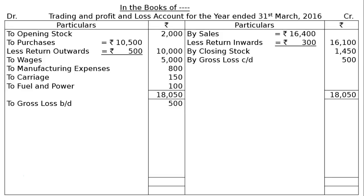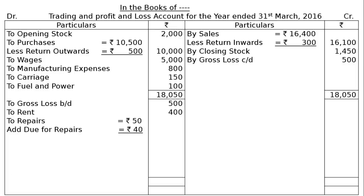In the profit and loss account, we bring down gross loss of rupees 500. Office expenses: rent rupees 400; repairs rupees 50 plus adjustment — fourth adjustment — due for repairs rupees 40 (outstanding repairs), totaling rupees 90. This outstanding repairs amount of rupees 40 will be shown as a current liability in the balance sheet. Next, trade expenses rupees 700 — although named trade expenses, they are office expenses and belong in the profit and loss account, not the trading account.